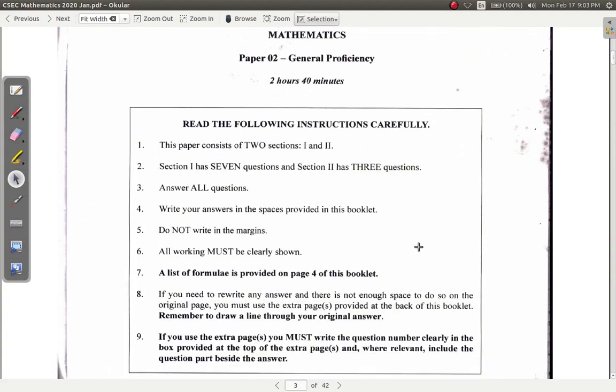Your instructions. You must read the instructions always. It says this paper consists of two sections, one and two. Section one has seven questions and section two has three. Answer all questions. You should write your name in the spaces provided in this booklet. Do not write in the margins. All work must be clearly shown.